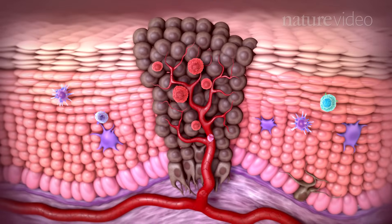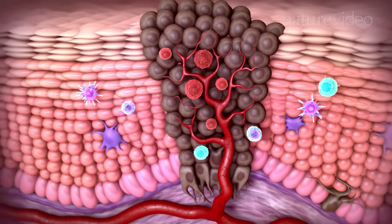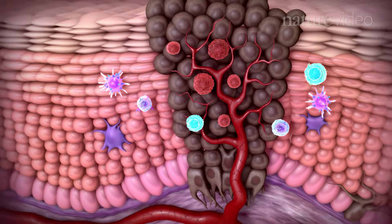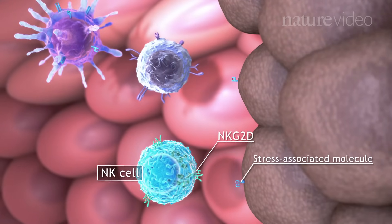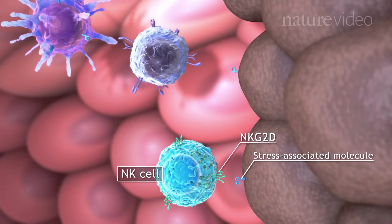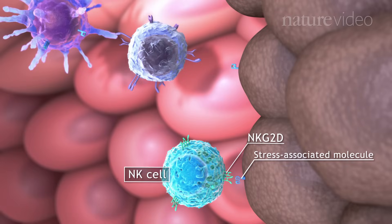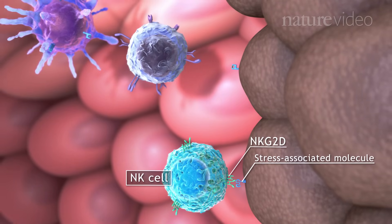The cells of the immune system are continuously monitoring our tissues. Natural killer cells, or NK cells, sense stress-associated molecules on damaged and cancerous cells.